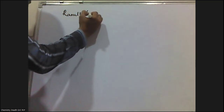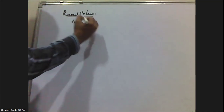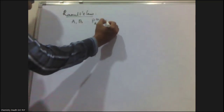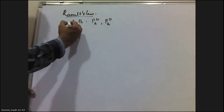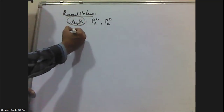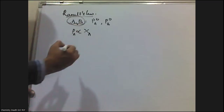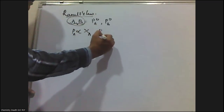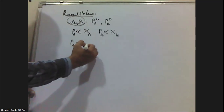In my previous video I discussed Raoult's law. According to Raoult's law, if we take two liquids A and B, let PA₀ be the vapor pressure of pure A and PB₀ be the vapor pressure of pure B. Then if I prepare a solution containing both liquid A and B, the partial pressure of each component is directly proportional to the mole fraction of that component in the solution. So PA = PA₀ × XA.